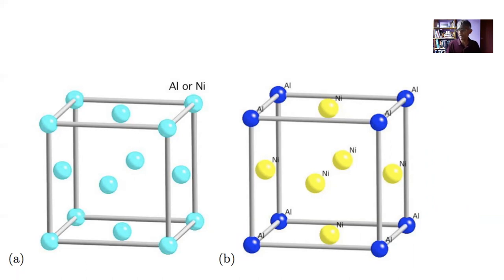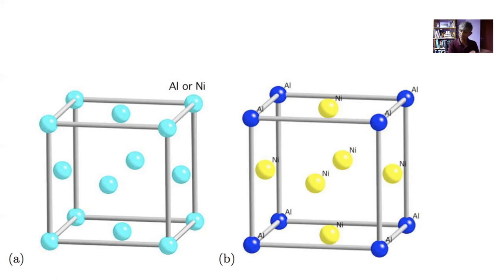In a random solid solution you have actually lost long-range periodicity, but nevertheless diffraction experiments pick up quite sharp peaks in X-ray or electron diffraction. When you add solutes to the matrix they cause localized strain, reflected in the lattice parameter, but around each solute atom you also have heterogeneous strains which lead to a slight broadening of the diffraction peaks. So we regard this as a crystal even though we don't have the strict definition of long-range periodicity.